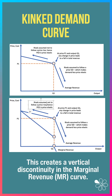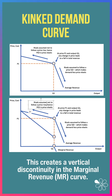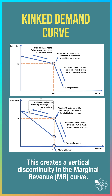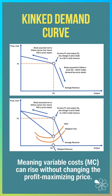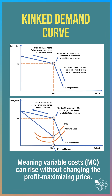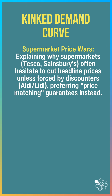This kink in the demand curve creates a vertical discontinuity or gap in the marginal revenue curve, as shown in the second diagram below. This means that variable costs can go up without changing the profit-maximising price.